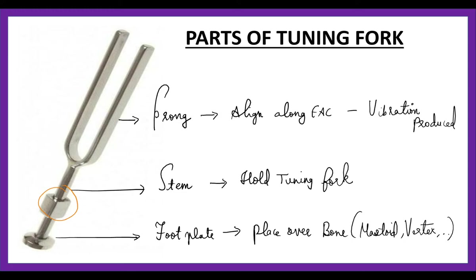Before we actually go to the test per se, we will see the parts of tuning fork to make it easier. The prong, stem, and the footplate. The prong is actually the vibrating part so we can align it along the external auditory canal. The stem we can hold to grip the tuning fork, and the footplate we can place over the bone based on the test. The place of the tuning fork which is placed on the surface is the same: the footplate.